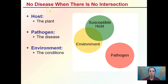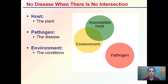There is no disease when there's no intersection. We have the host in the proper environment but there's no pathogen present — at the same time you don't get disease. Same thing if you have the host and the pathogen without favorable environmental conditions, you still will not get a disease.